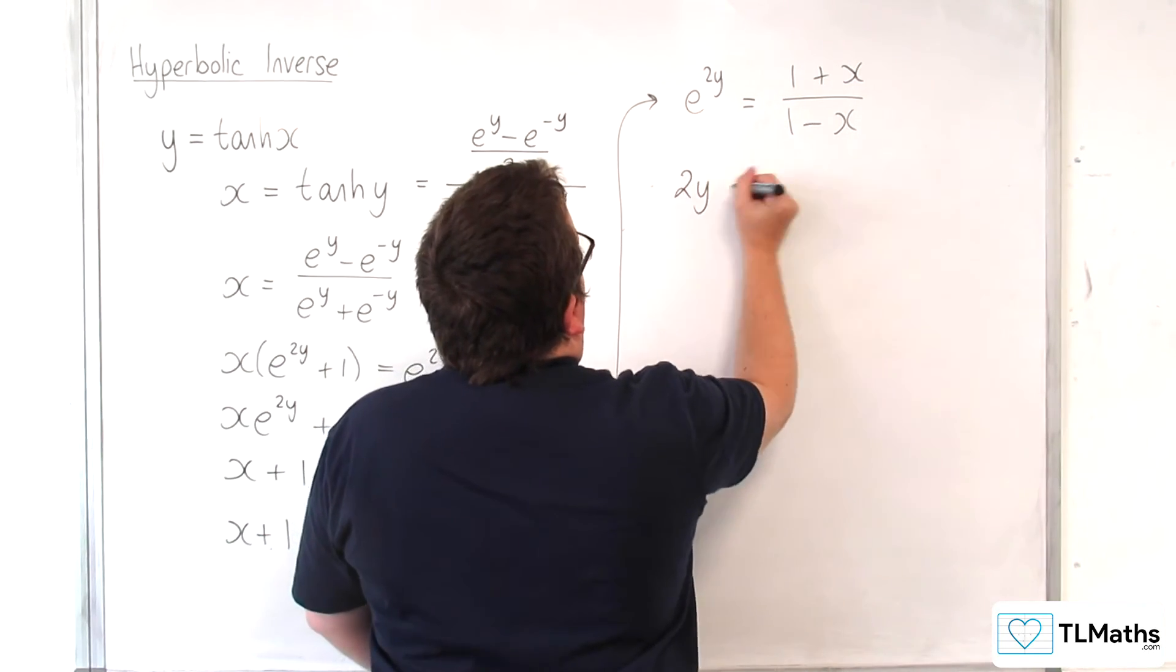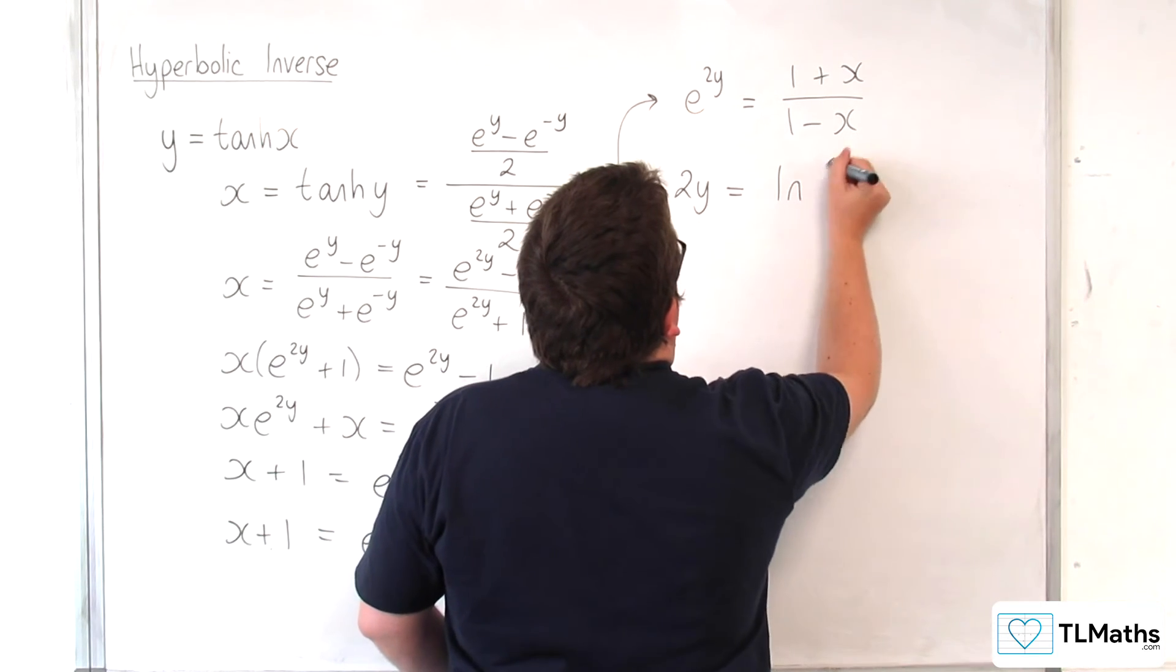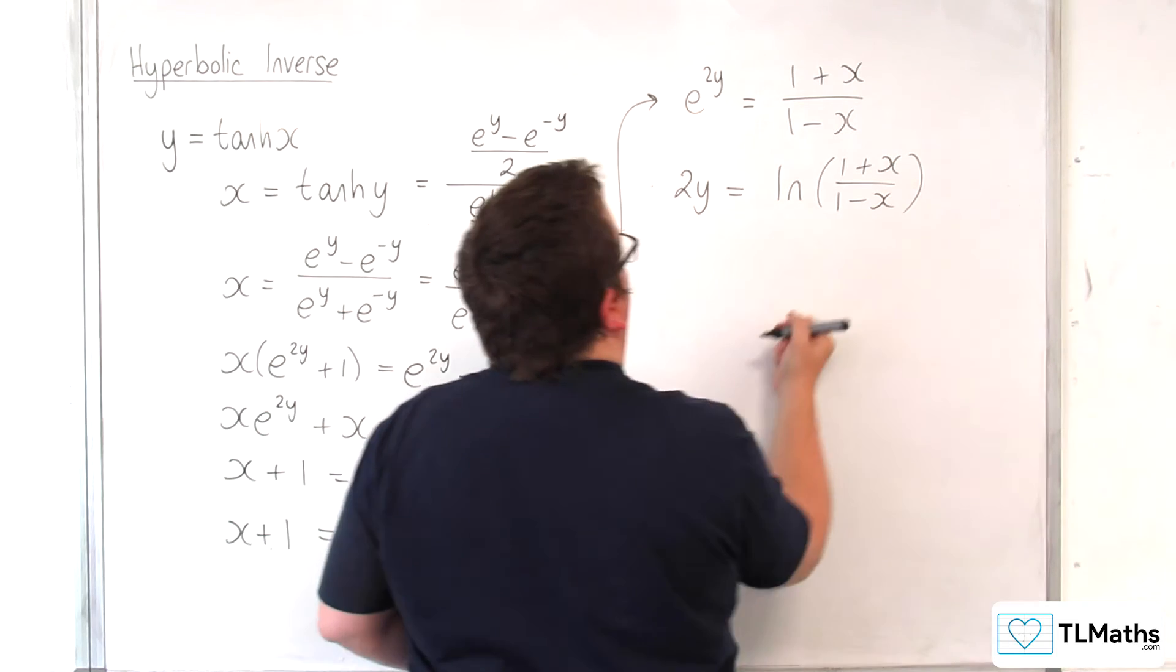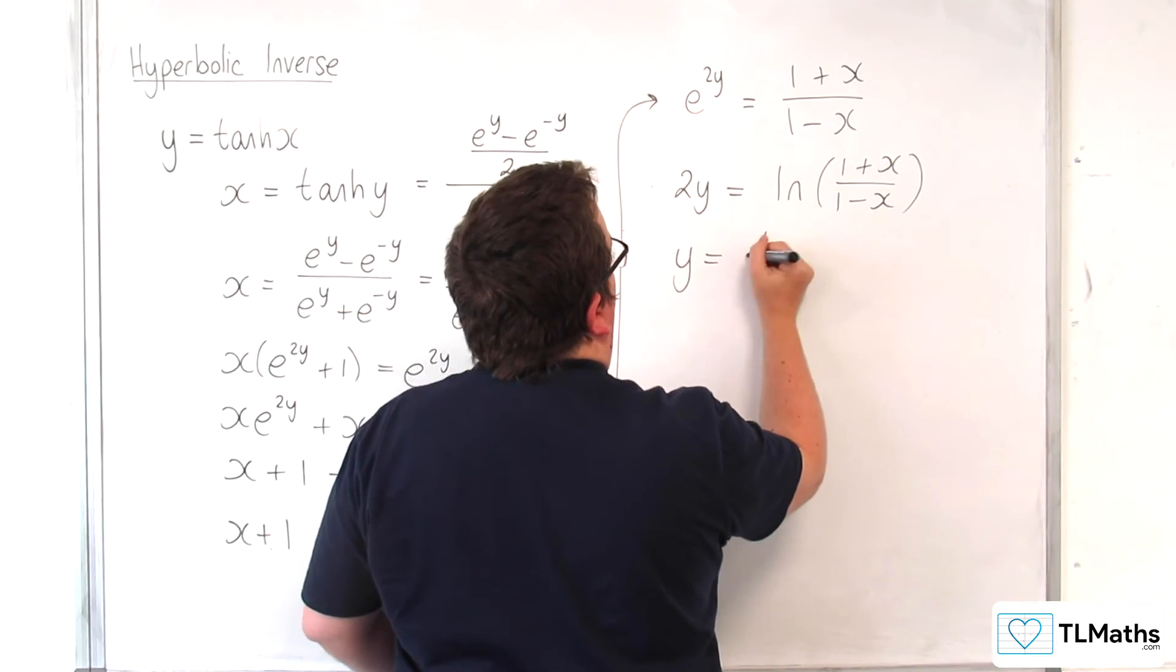So 2y will be equal to the natural log of 1 plus x over 1 minus x. And then we can divide both sides by 2.